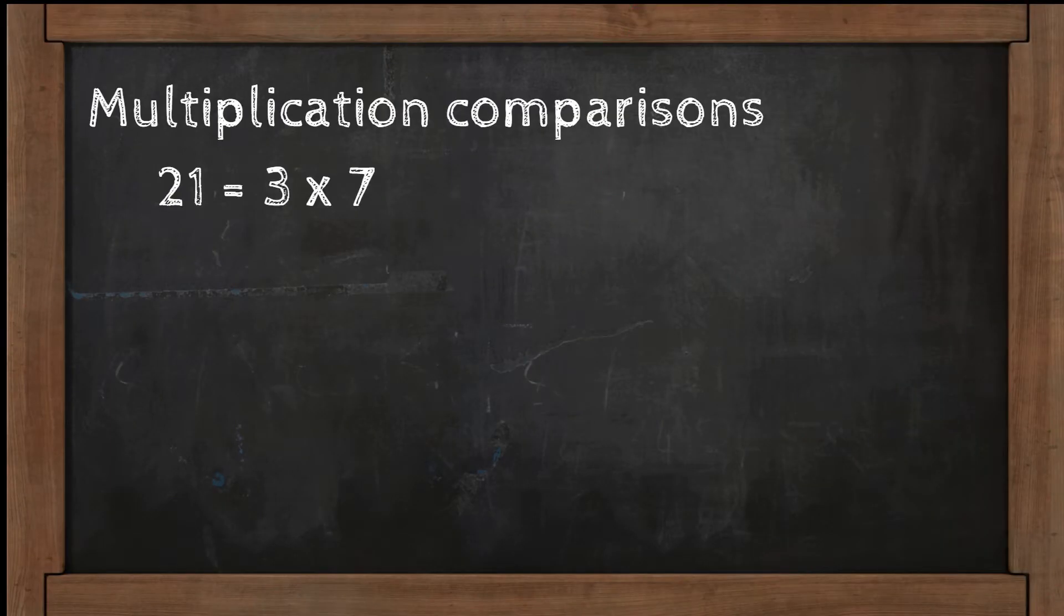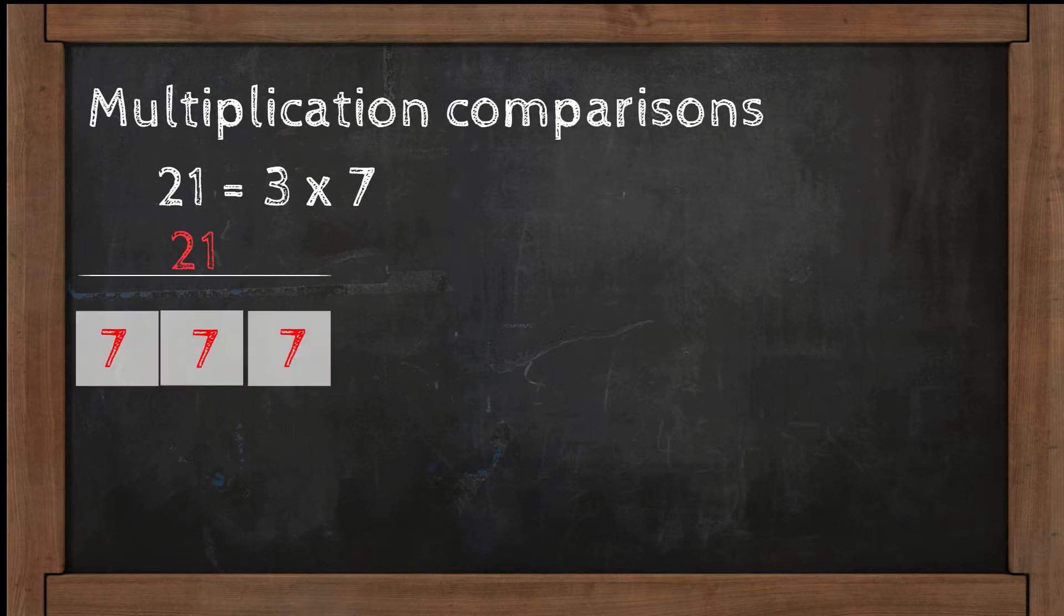Let's think of 21 equals 3 times 7. You can compare this multiplication in two ways. 21 is 3 times as many as 7.